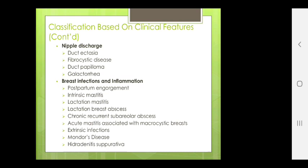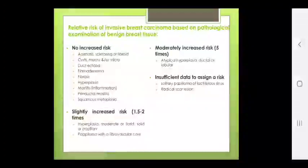Relative risk of invasive breast carcinoma based on pathological examination of benign breast tissue: Moderately increased risk in atypical hyperplasia, ductal or lobular — five times risk. Slightly increased risk with hyperplasia, moderate or florid, solid or papillary, and papilloma with fibrovascular core — 1.5 to 2 times risk. Insufficient data to assign a risk for solitary papilloma of lactiferous sinus or radial scar lesion. No increased risk in adenosis, sclerosing or fibroid, cyst micro or macro, duct ectasia, fibroadenoma, fibrosis, hyperplasia, mastitis, periductal mastitis or squamous metaplasia.